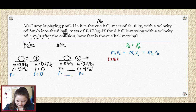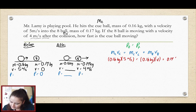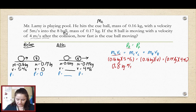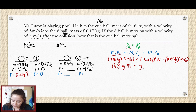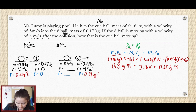So we have the mass of the cue ball, 0.16 kilograms, times its velocity of 5 meters per second, equals 0.16 kilograms times its velocity after the collision, plus the mass of the eight ball times its velocity after the collision. So we have 0.16 times 5, which is 0.8 — that represents the momentum of the cue ball before the collision: 0.8 kilogram·meters per second. That's our total initial momentum. Equals 0.16 times V — that's what we're trying to find — plus the momentum of the eight ball after the collision, which is 0.17 times 4, giving 0.68 kilogram·meters per second.